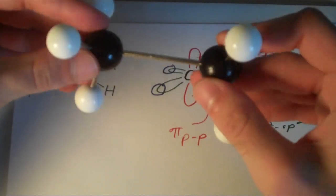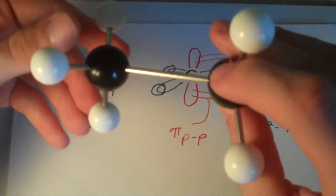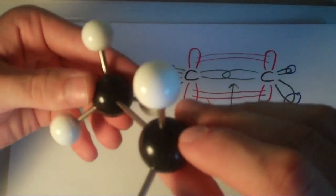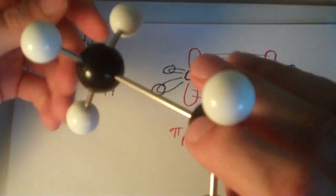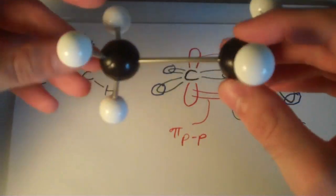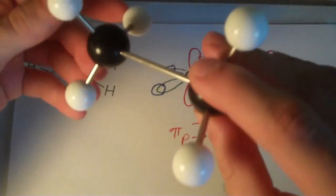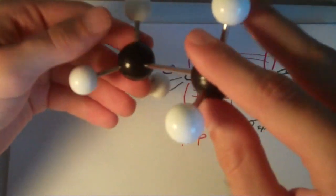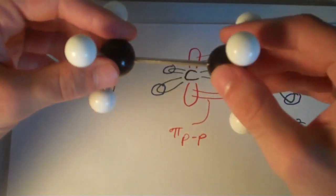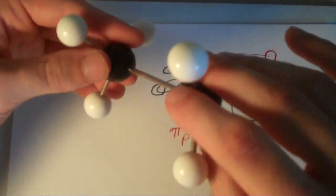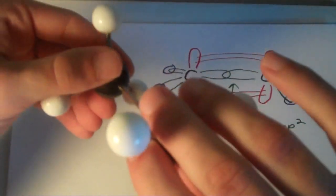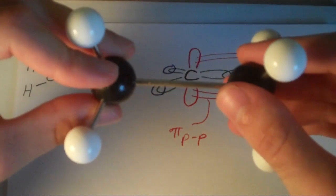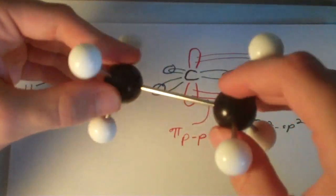And at room temperature, these atoms have more than enough kinetic energy so that there can be free rotation around this bond. So there can be an infinite number of what we call conformations around this bond based on how the atoms that are bonded to these carbons are oriented with respect to one another.